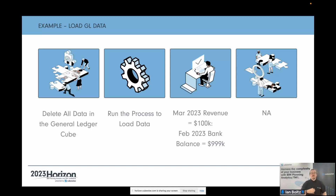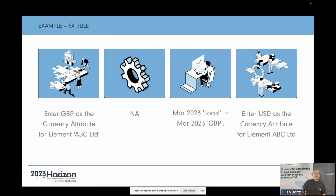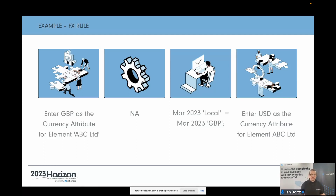In production or development those numbers might be different, so you might be testing different numbers, but the understanding from the business of what those numbers are is what we're testing. A final example would be testing a rule — there is no process to run. We enter a currency attribute, say GBP for ABC Limited, then just look at the data in the cube to make sure local equals GBP, since it's a one-to-one currency calculation. Then we clean up by entering USD back as the currency attribute.